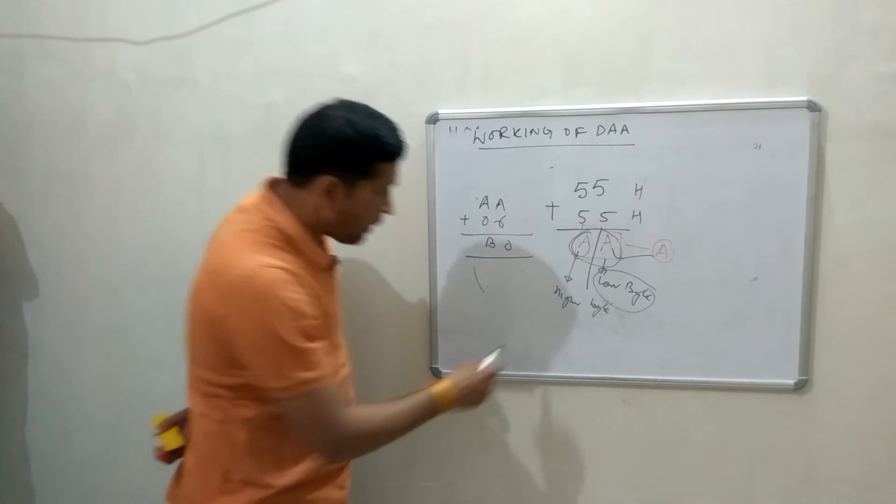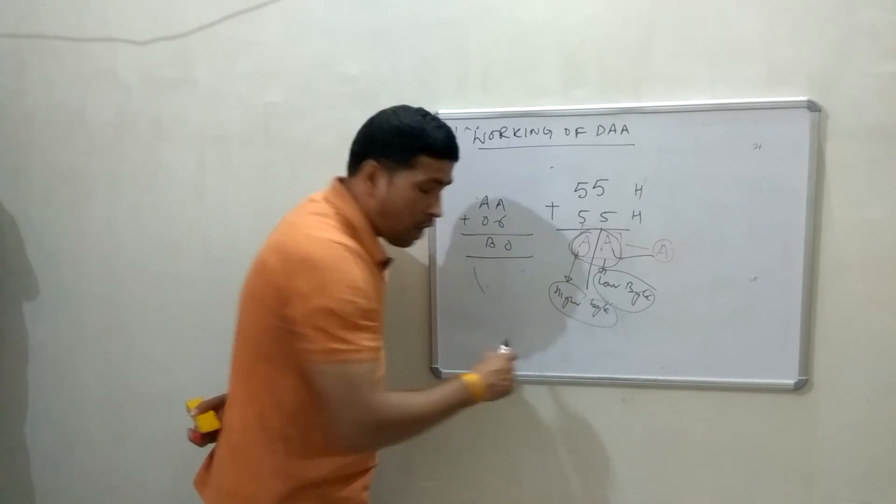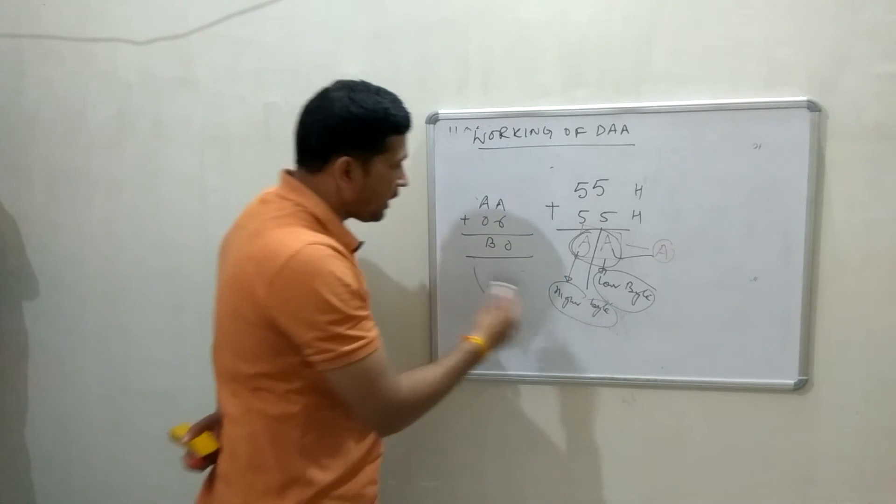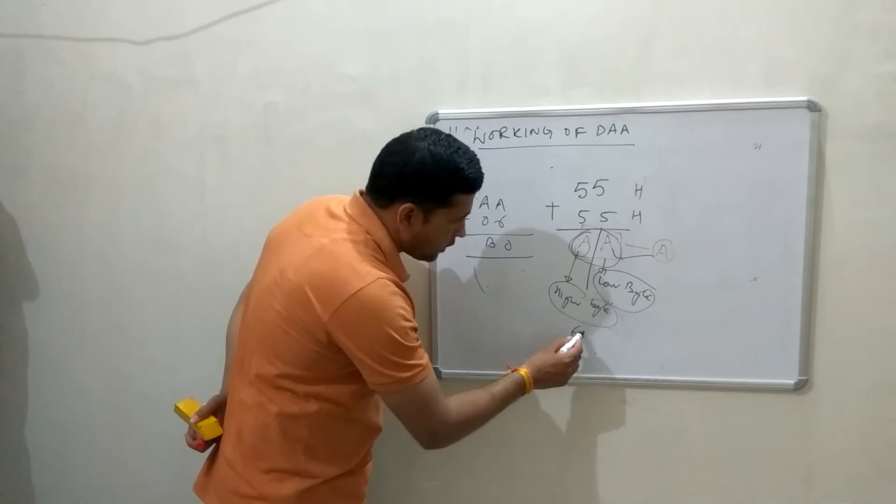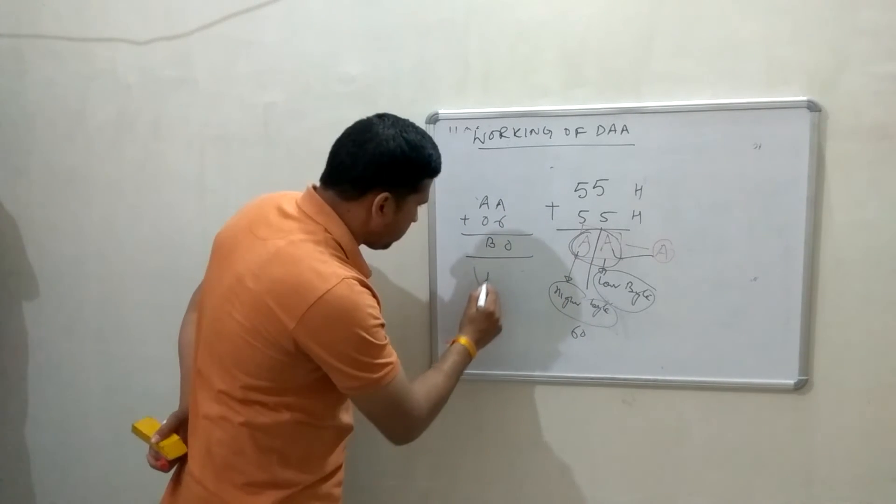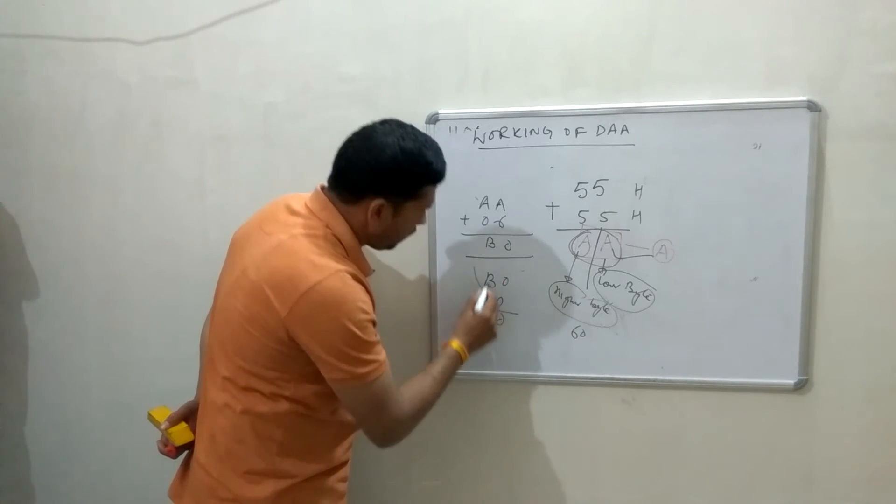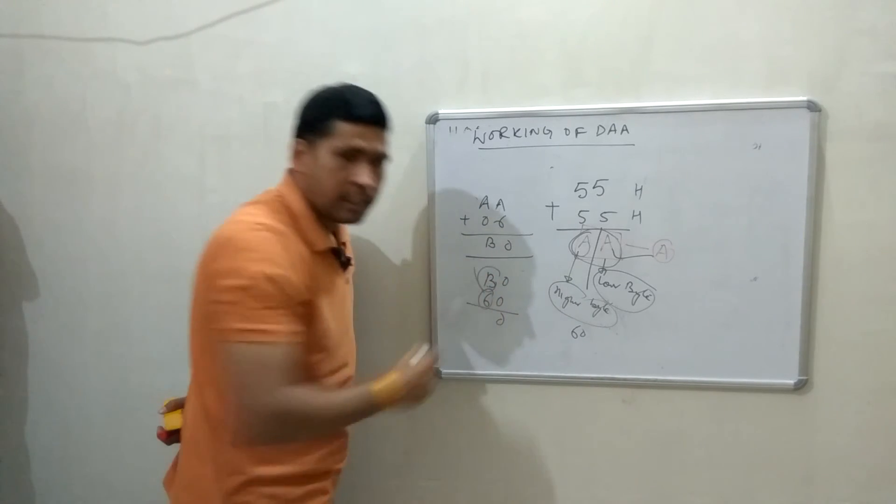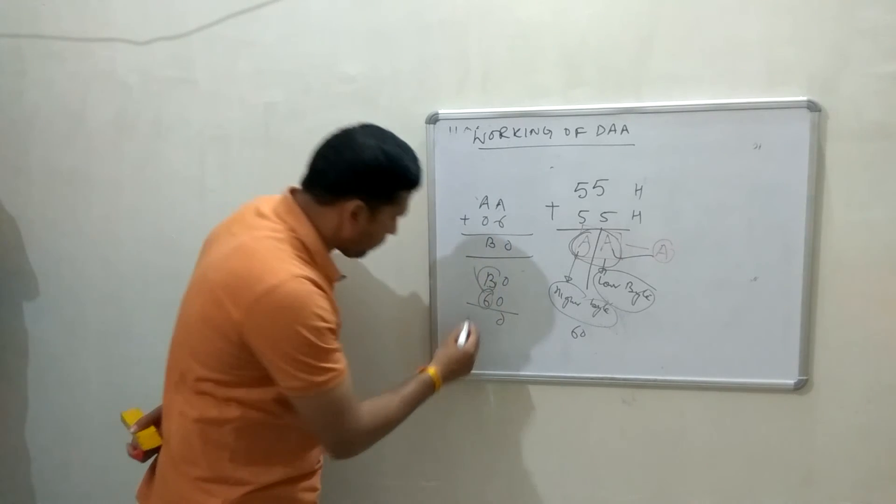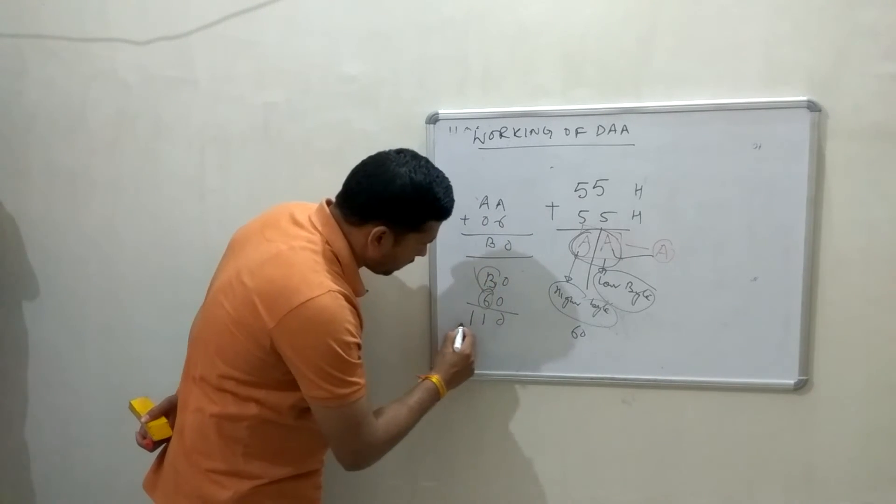Second condition is, if higher byte is also greater than 9, then it will be add 60. Now, 60, 0, 11 plus 6, that is 17, that is 110.